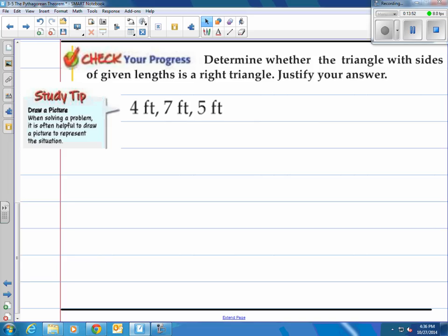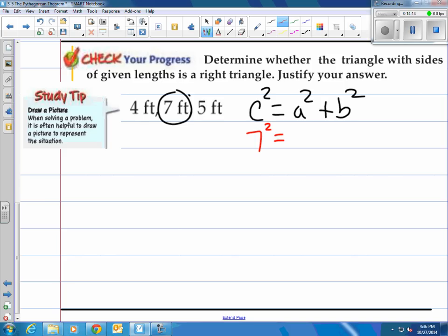Determine whether the triangle with sides of given lengths is a right triangle. Justify your answer. Well, let's all do it together. What the heck? So you got 4, 7, and 5, which is our hypotenuse? This one. So we've got c² is equal to a² + b². Well, let's plug these in. All right, so let's plug in 7 here. I'm going to square that. And then A is 4. I'm going to square that. And then B is 5. I'm going to square that. A and B can be interchanged. It doesn't matter where you put the 4 and the 5, as long as it is in for A or B, not C.